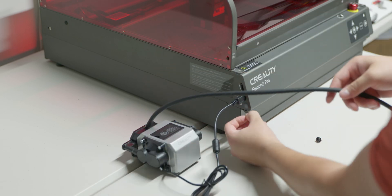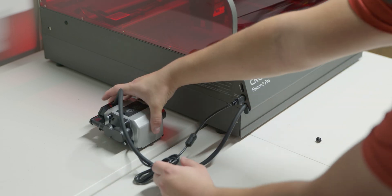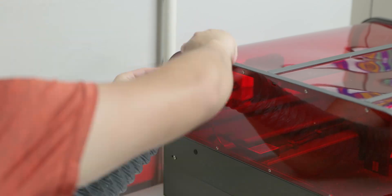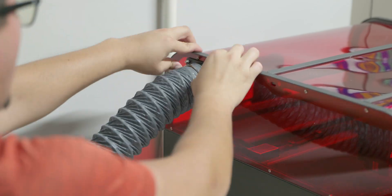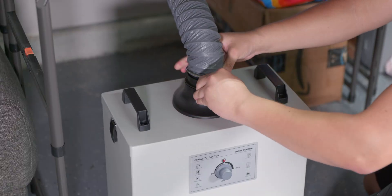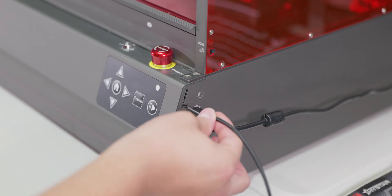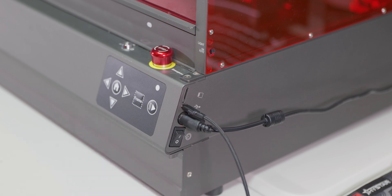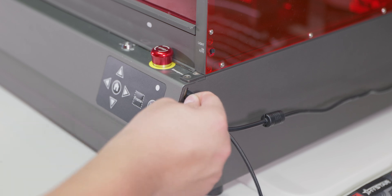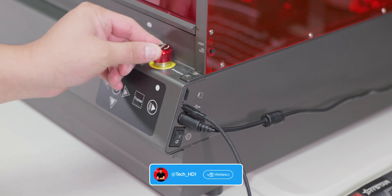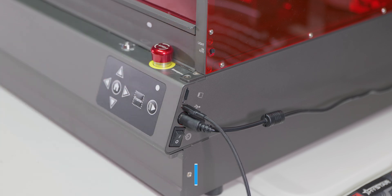We'll connect the air assist unit, which is just one connection and the tube, very simple to set up. Next we'll add the ventilation tube into the Falcon 2 Pro being held by a clamp, with the other end connected to the smoke purifier. On the other side we'll connect the power port and USB-C to control the unit. There's also a power switch and micro SD card slot for offline creation, plus another USB-C port for the built-in camera.